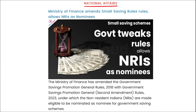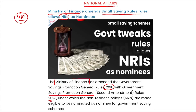First, we are talking about national affairs. The Ministry of Finance amended the small savings rules and has allowed NRIs — non-resident Indians — as nominees. This step amended the small savings rules for 2018 under the Government Savings Promotion General Rules 2023, allowing NRIs to be nominated as nominees for government savings schemes.